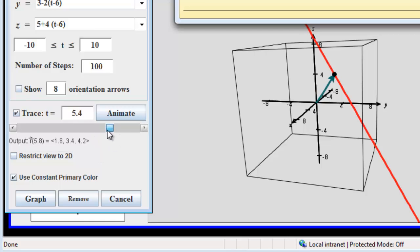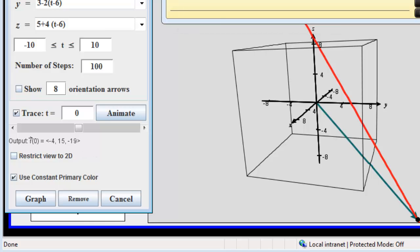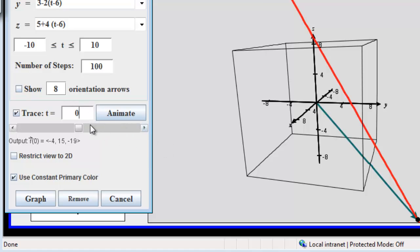At time t equals 0, of course, we're somewhere else. We're at negative 4, 15, negative 19 at t equals 0. At t equals 6, I guess we can go right up to it now. We are at 2, 3, 5. And, so that's exactly what we wanted to see.